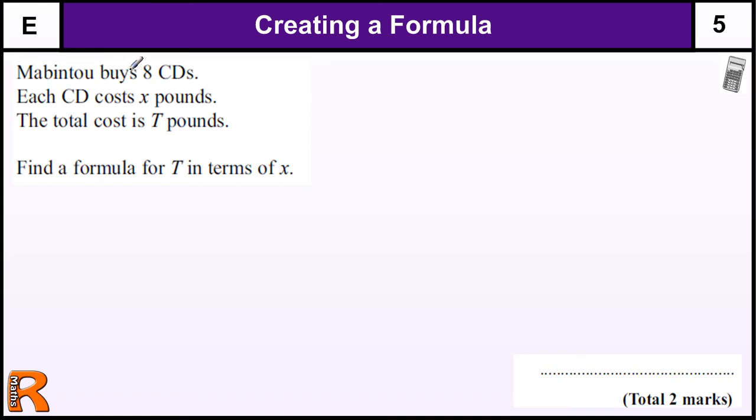So, Mobidin buys eight CDs, each CD costs X pounds, the total cost is T pounds. Find a formula for T in terms of X, so it's a fairly easy one.